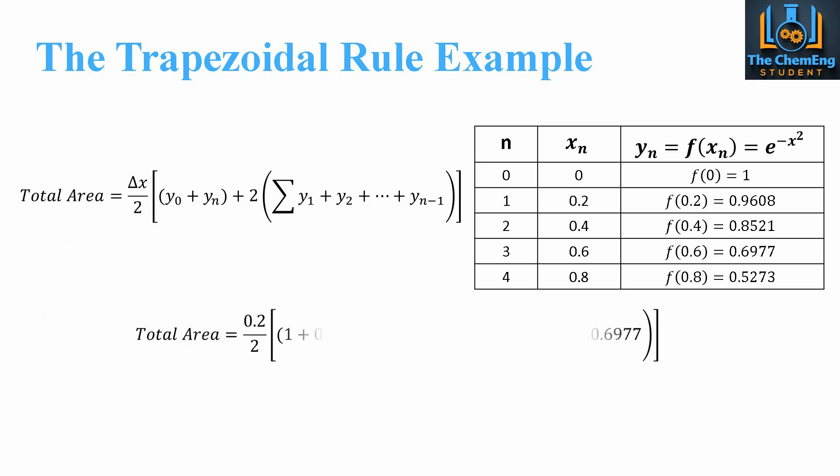So if we bring back the formula, then all we have to do is say, well, y0 is the initial. So that's this point here. yn is the final. So that's this point here. So we can clearly see this. We know delta x was 0.2. Now we just add up the sum of all the internal points. So that would be these three. So we can clearly see that they are here. And then we just add these together, multiply it by two, bring this together. And it's just a case of number crunching. We pop in and we get the total area is 0.655 units squared.